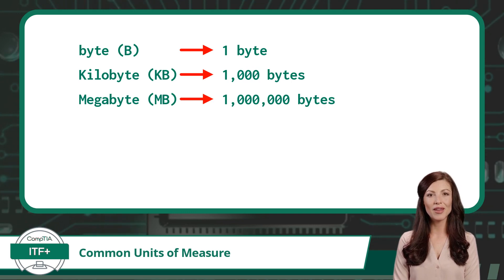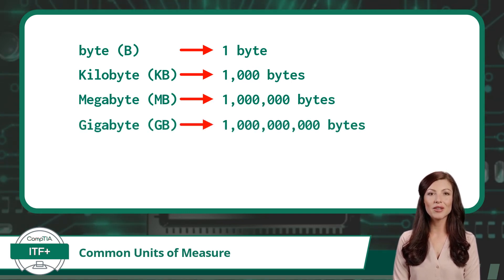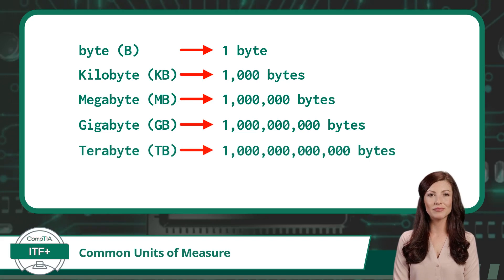This is followed by giga. Giga means billion, so a gigabyte equals 1,000,000,000 bytes. Then tera. Tera means trillion, so a terabyte equals 1,000,000,000,000 bytes.